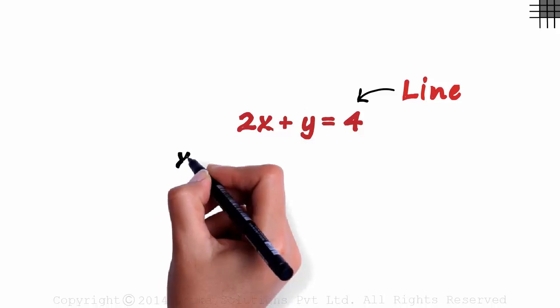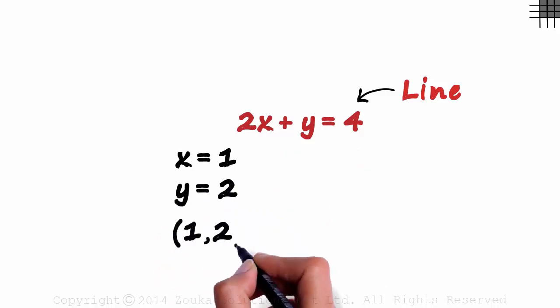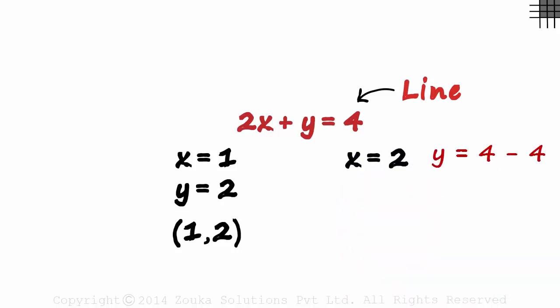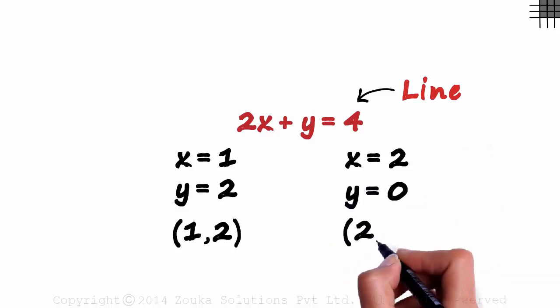Let's say x is 1. y will be 4 minus 2 which is 2. 1 comma 2 will be the coordinates of one of the points. Now let's try x equal to 2. We get the value of y as 4 minus 4 which is 0. So 2 comma 0 will be the coordinates of the second point.